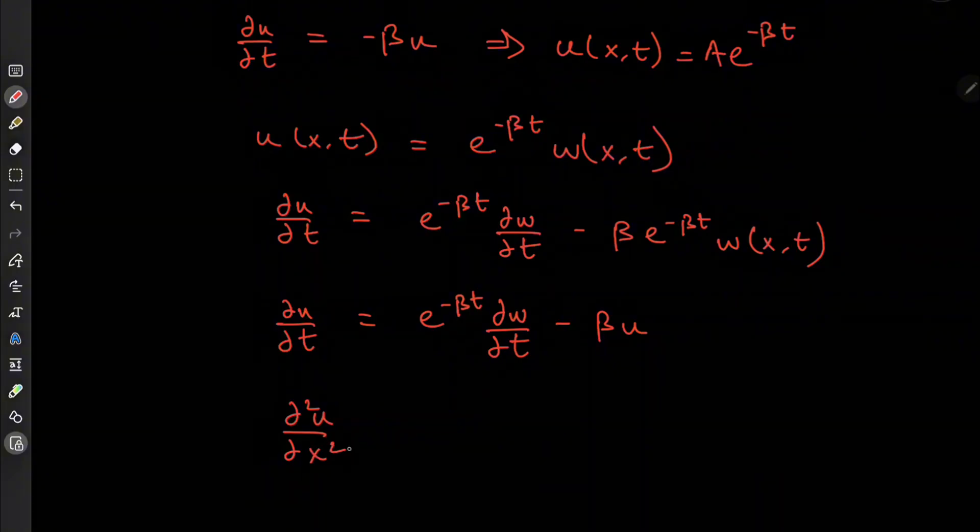Partial squared u over partial x squared would equal e to the minus beta t times partial squared w over partial x squared.